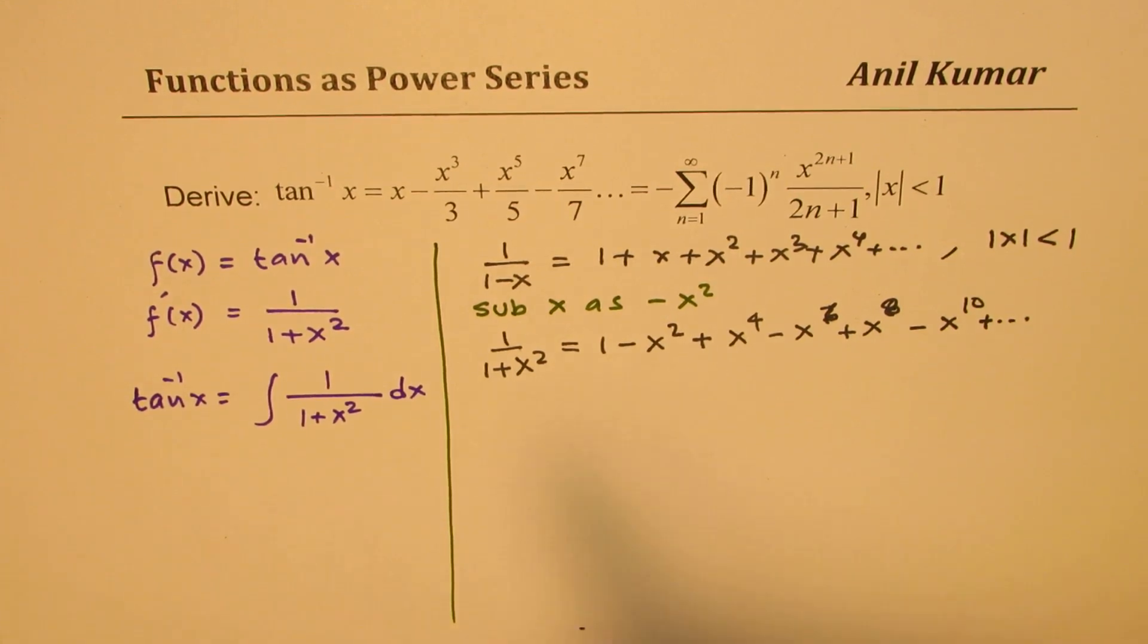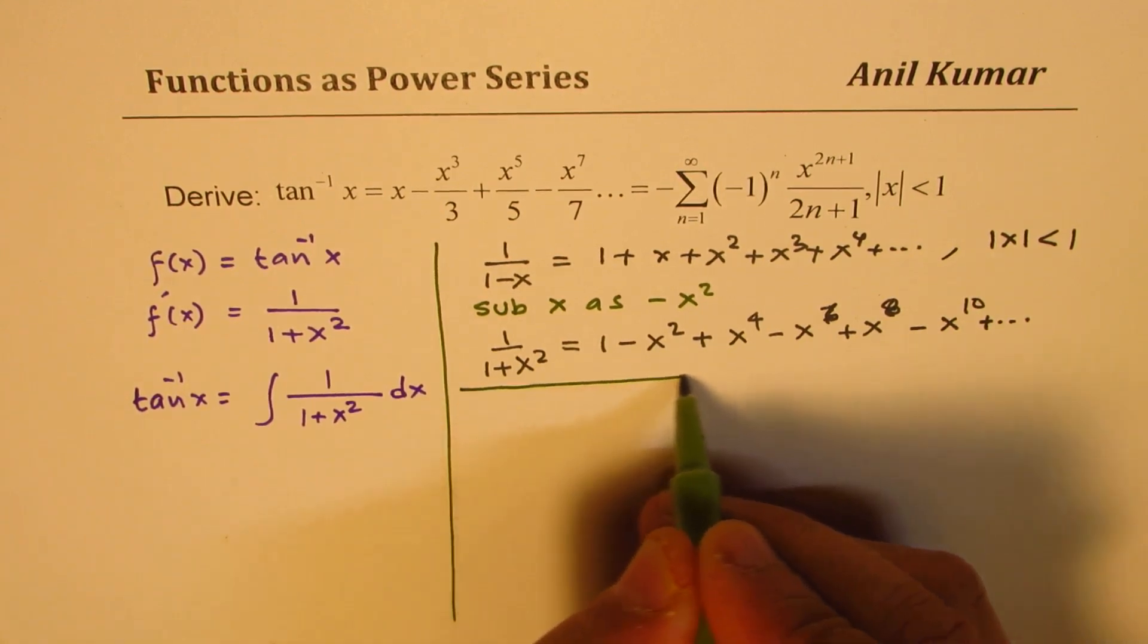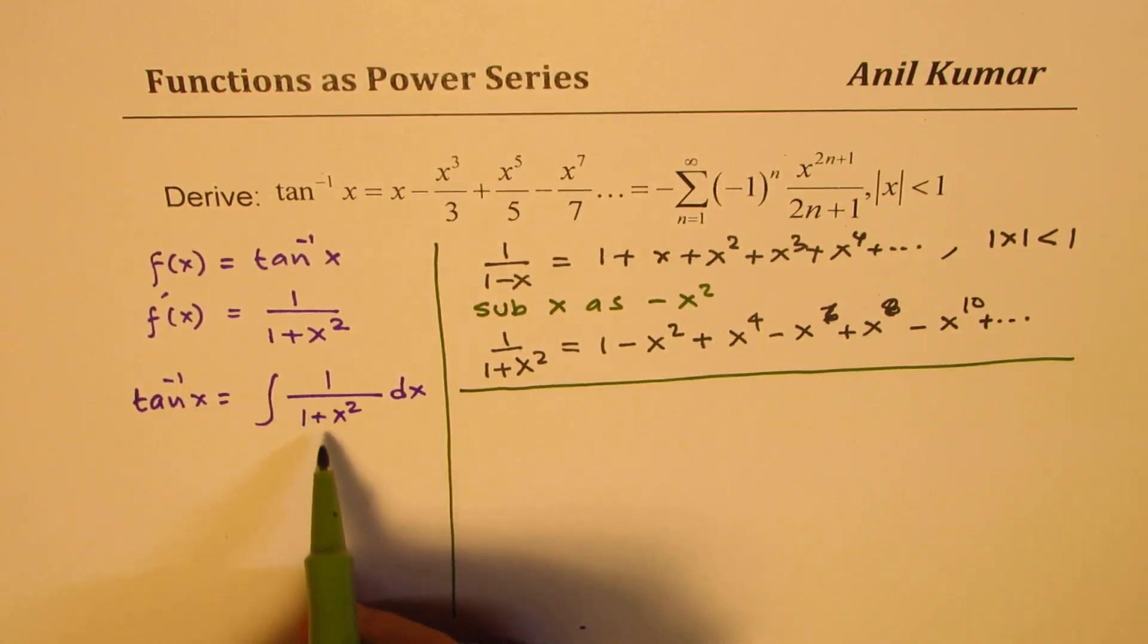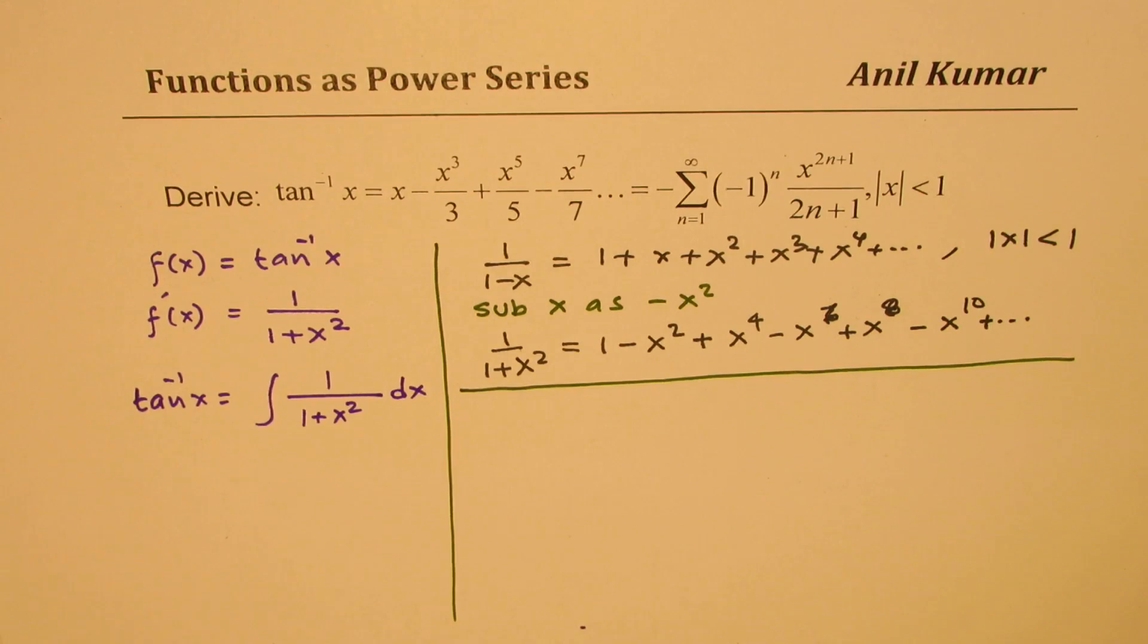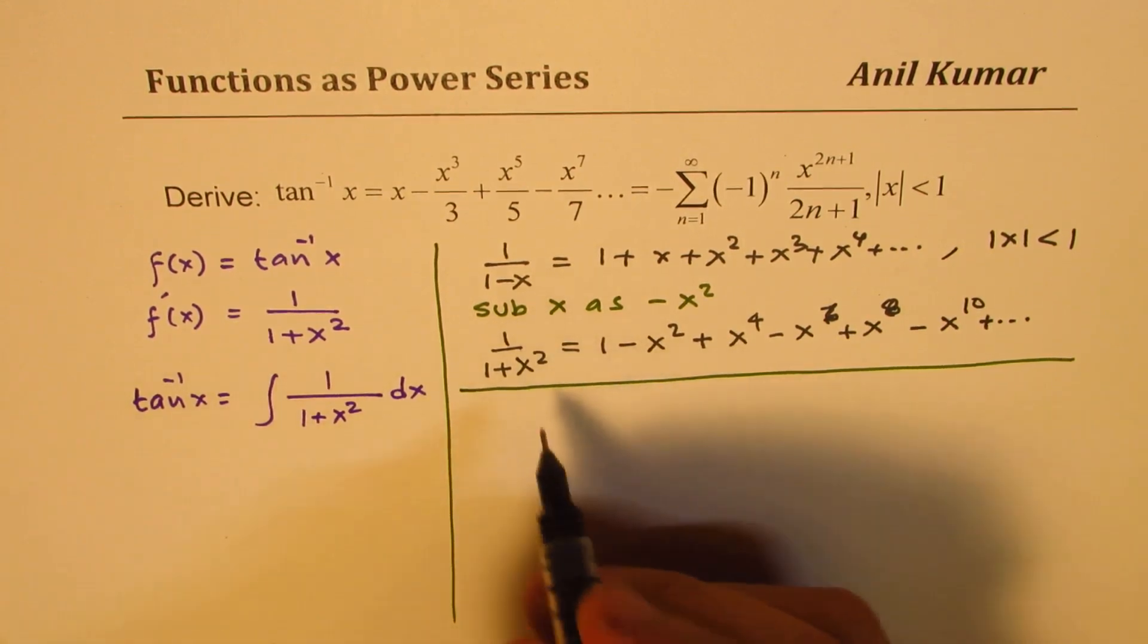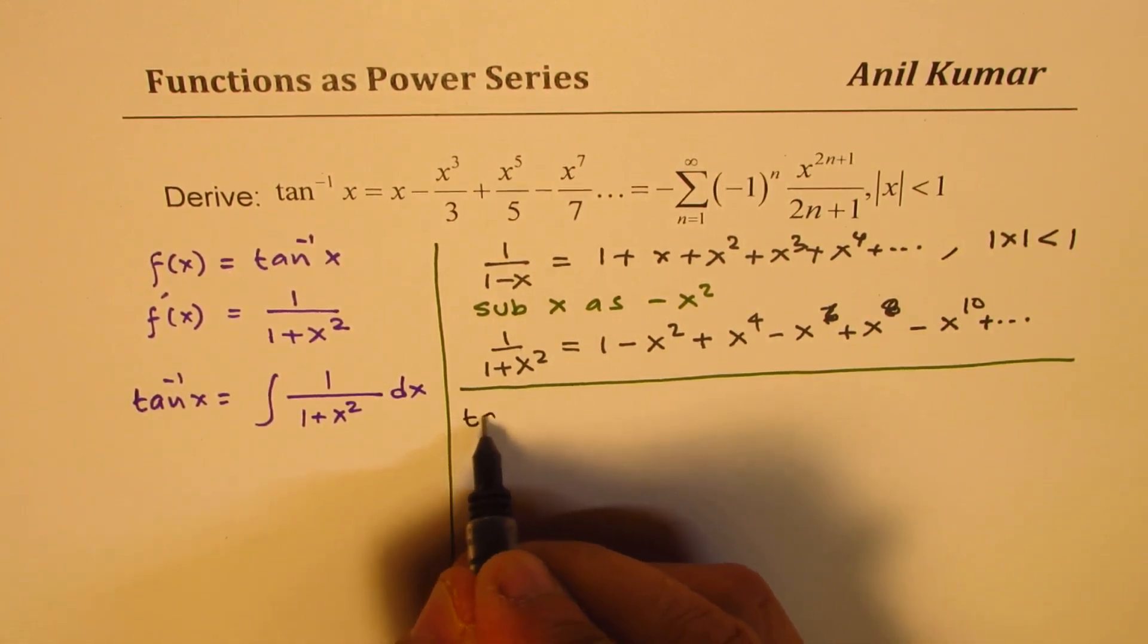That is this series, and now I think it's simple. We just have our function which is tan inverse x and we can now write this as integral of all this.